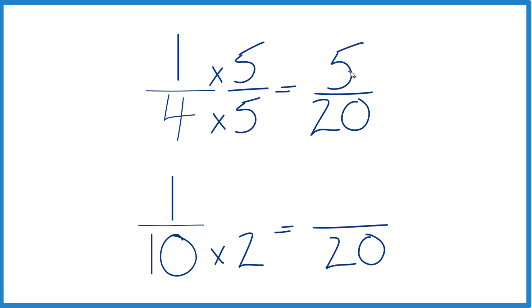So, 1 times 5, that's 5, and 5 twentieths, that's equivalent to 1 fourth, same value.